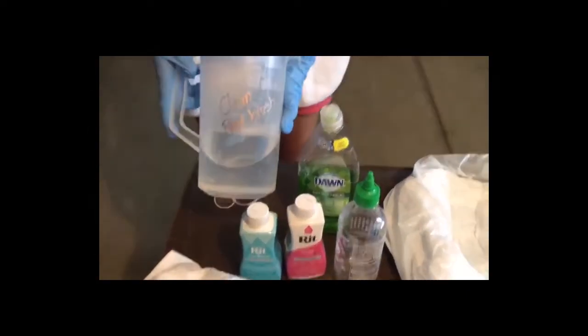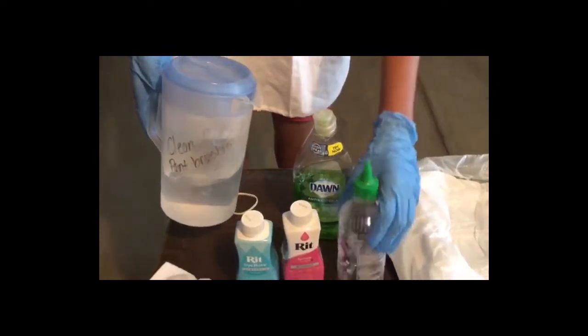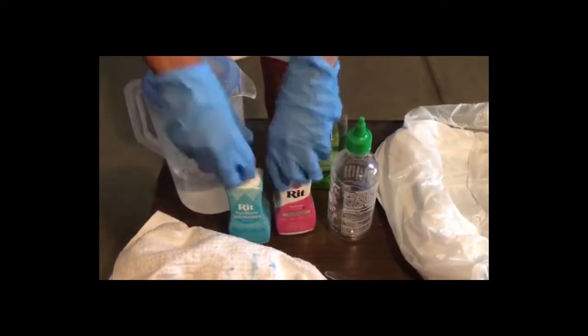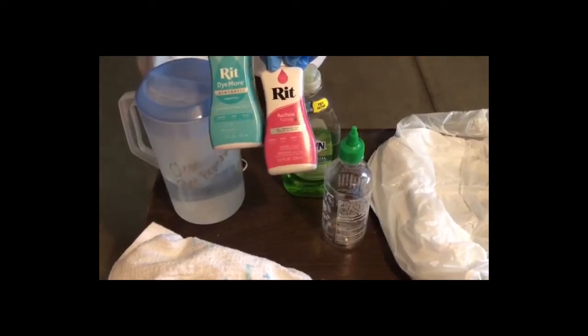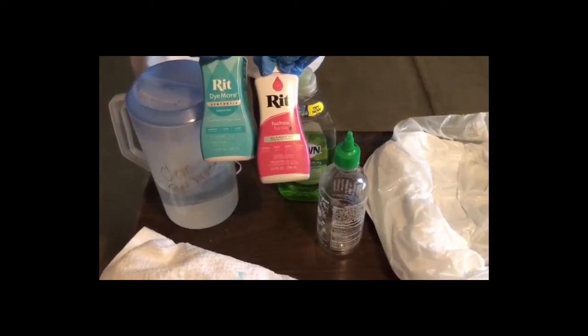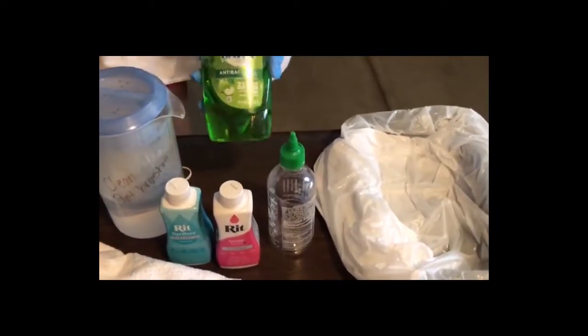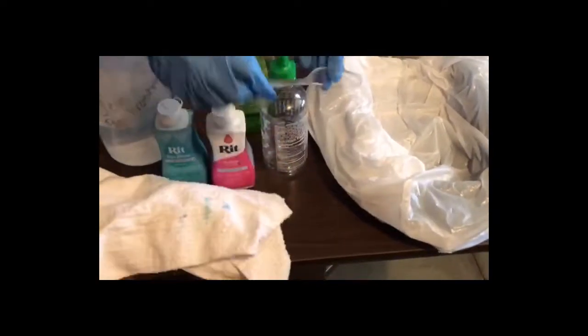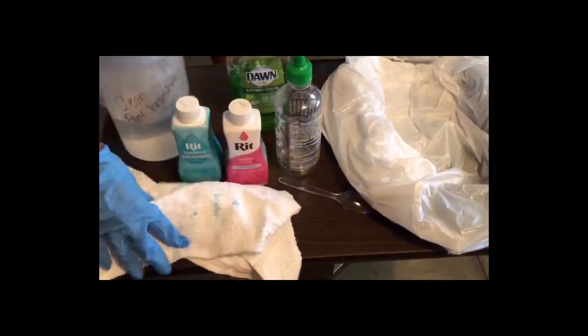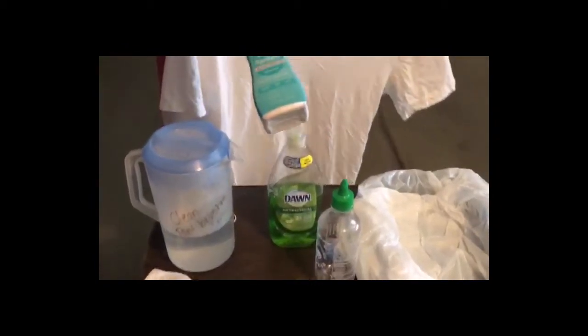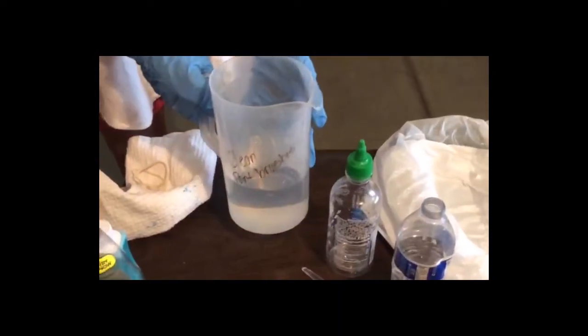For the color tie-dye you'll need hot water enough to fill up this bottle, Rit tie-dye (you don't have to get Rit, you can also get a tie-dye kit - we got ours from Michaels), dishwashing soap, a spoon to mix the mixture, and a towel to test the colors. We are going to be using this blue dye for this t-shirt.